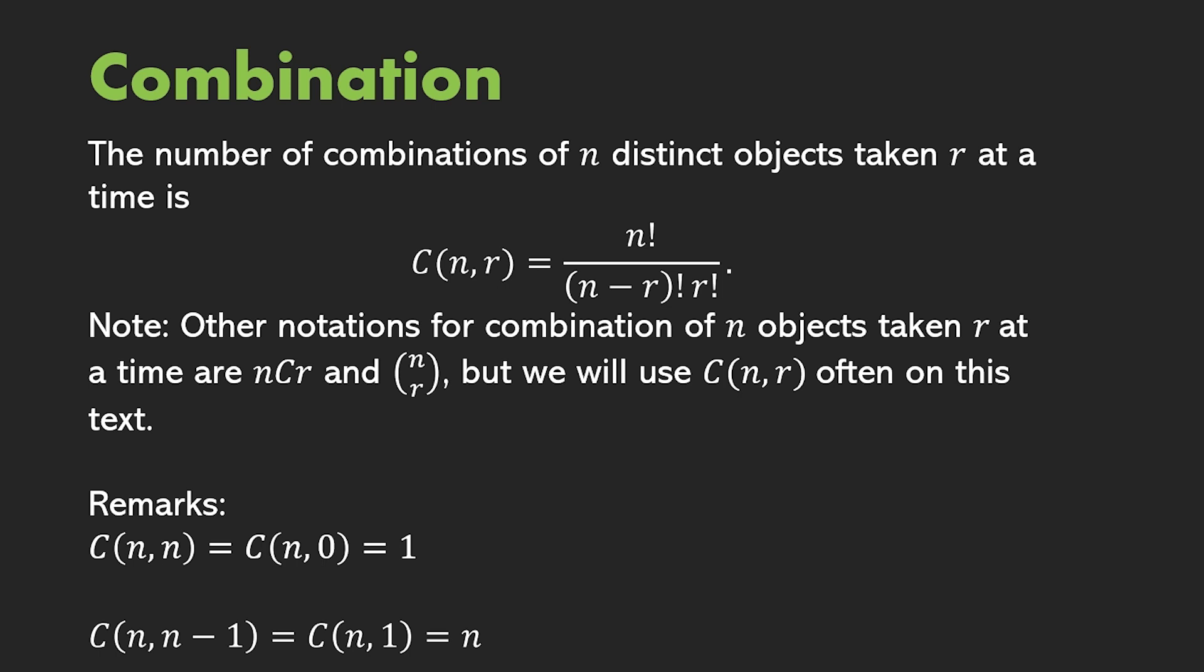The number of combination of n distinct objects taken r at a time is n factorial divided by n minus r factorial, r factorial. So, ang difference ito kay permutation, nagkaroon pa ng r factorial dun.